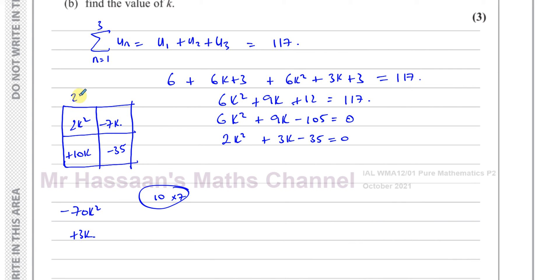The common factor from these two is 2K. 2K times K is 2K squared, 2K times plus 5 is plus 10K. This gives you (2K plus 7)(K minus 5) equals 0. So we have K equals 7 over 2.